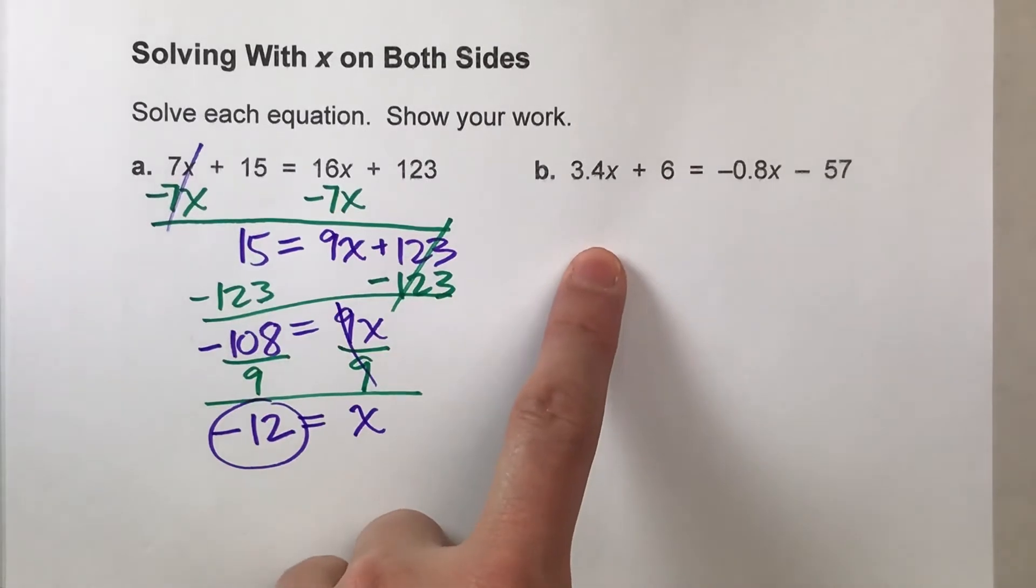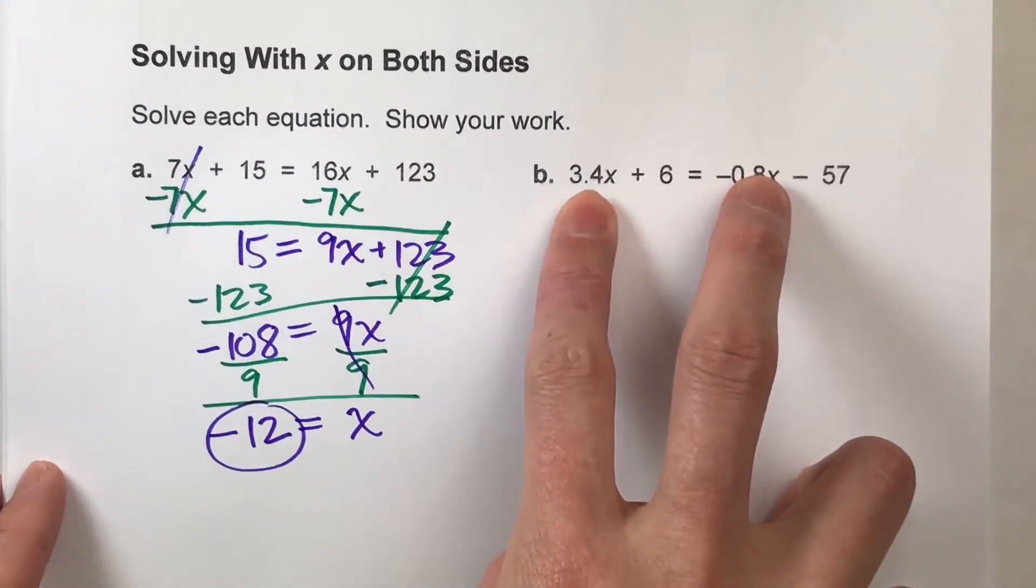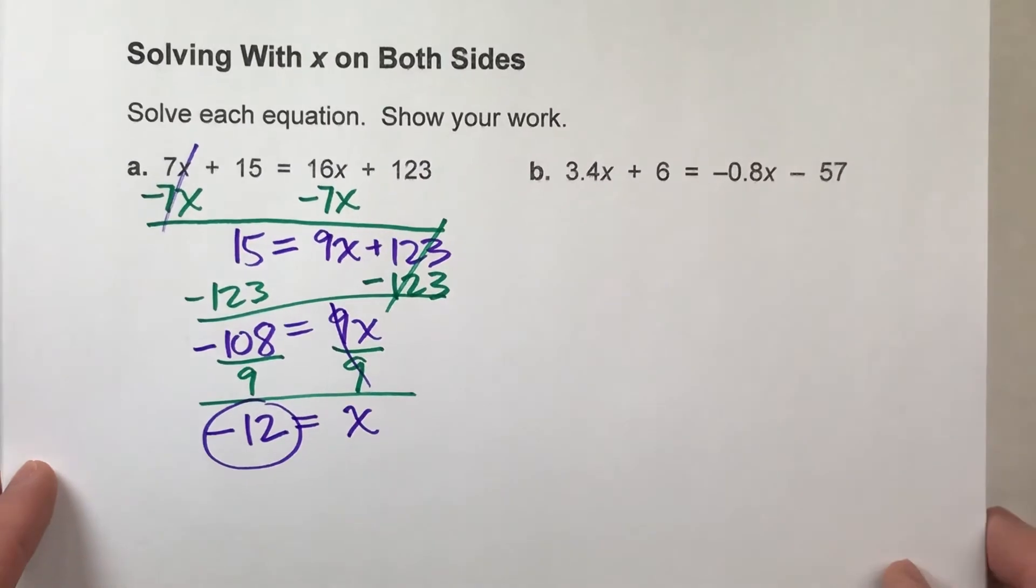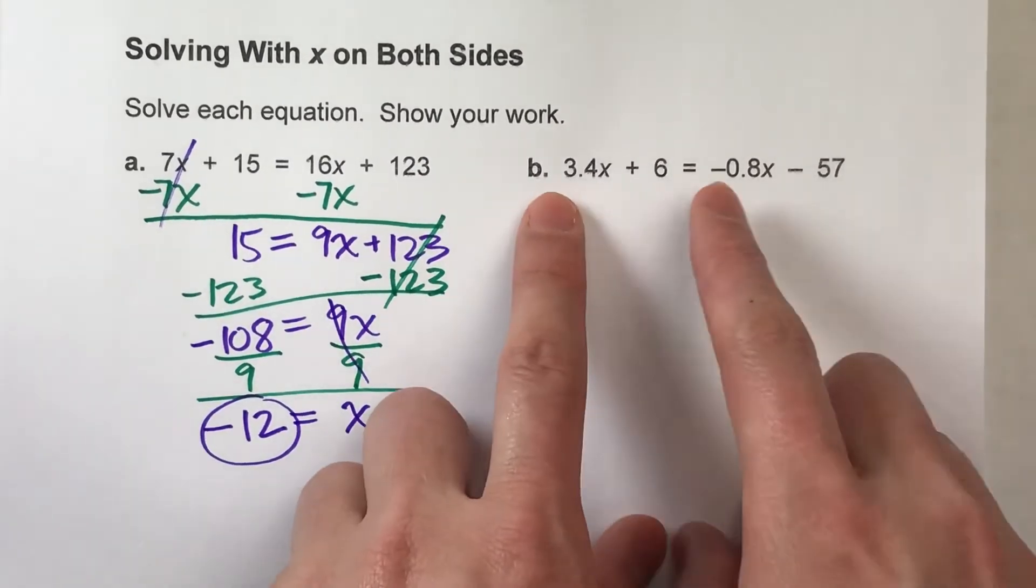Alright. Let's do this other one now. This one, again, we've got x's on both sides, but notice we've got decimals in there. It does not change how we solve the problem, though. Alright.